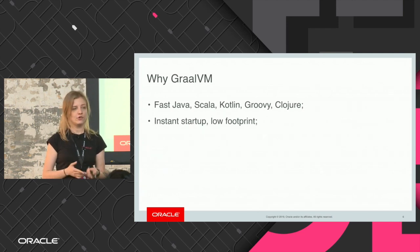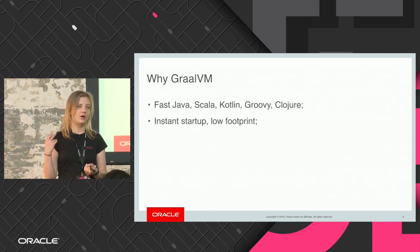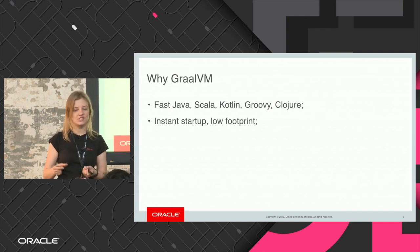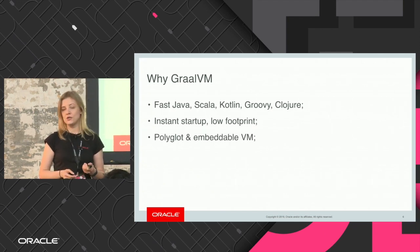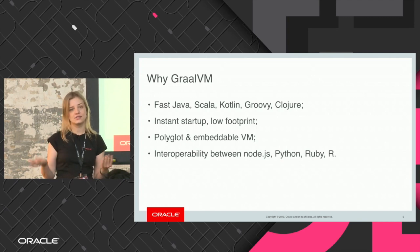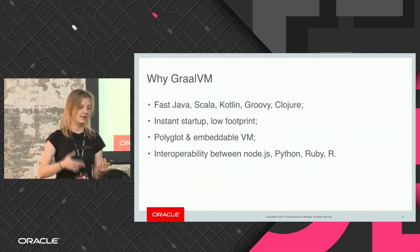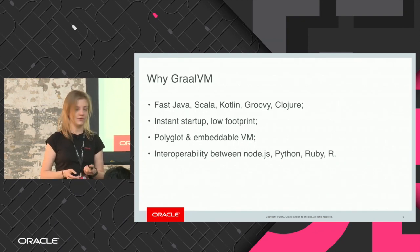Second, it can offer instant startup and a low-memory footprint with our native images technology, which allows you to compile Java programs ahead of time and get a native binary that starts really fast and consumes so much less memory than the traditional setup. Also, it is polyglot and embeddable, meaning it works for various sets of languages and platforms, so you can enrich your existing platform and application with new capabilities that GraalVM can offer.